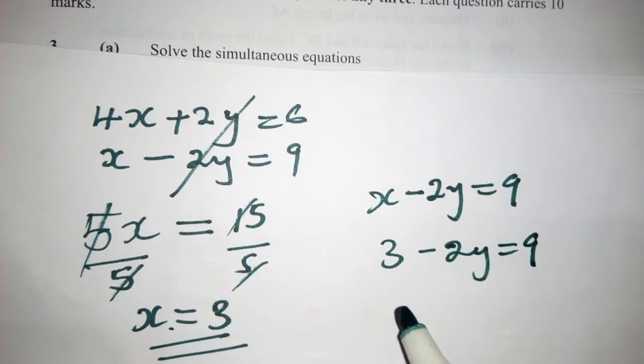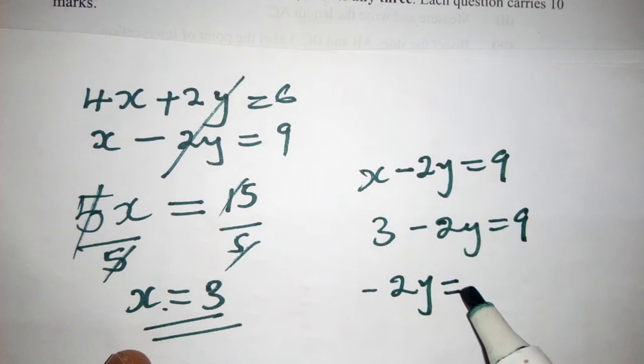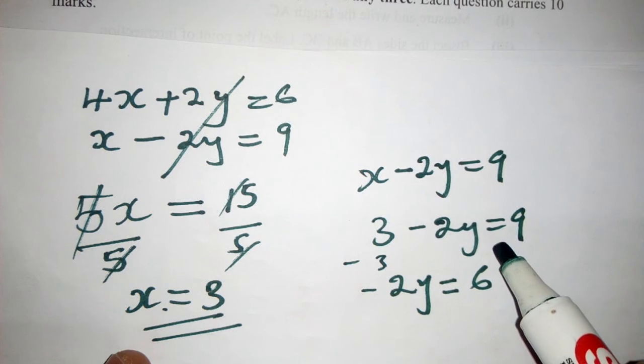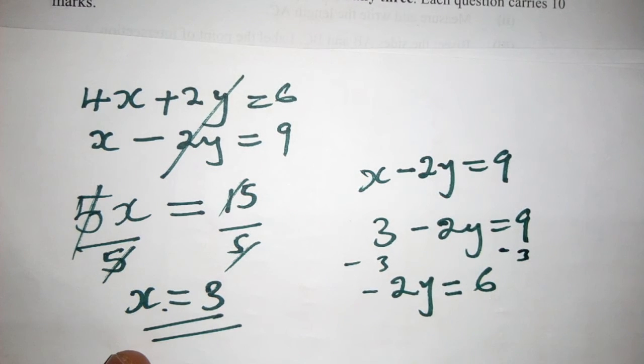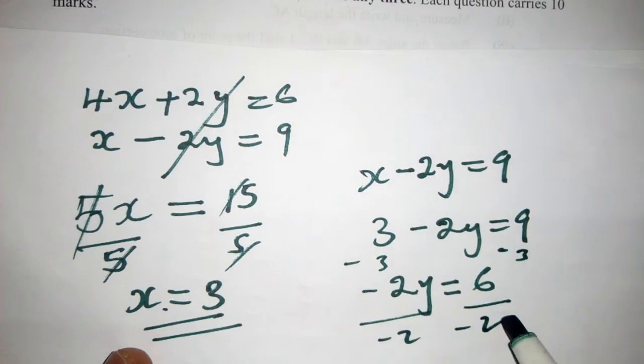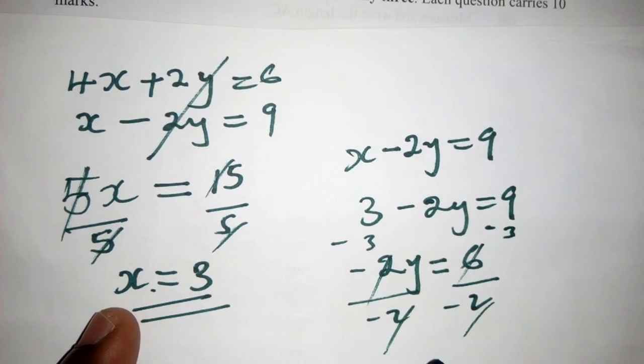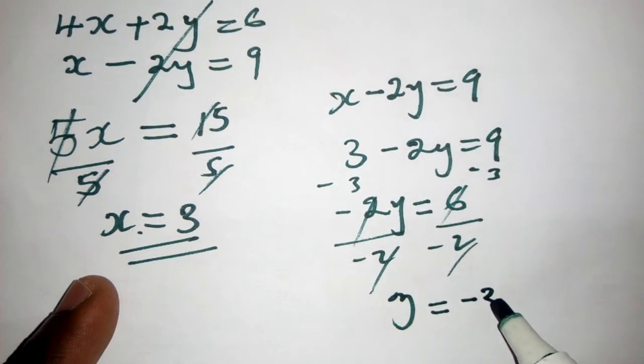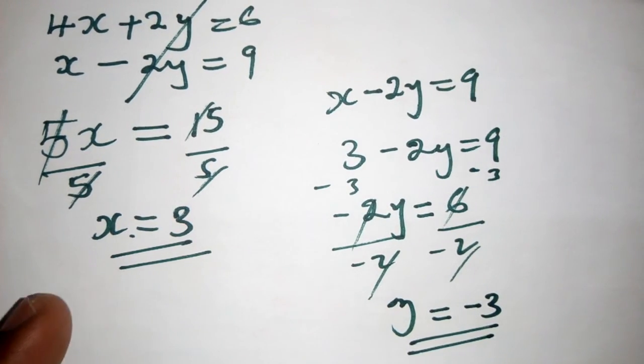Then I solve for y. So here it will be 6. I've just subtracted 3 from both sides. And then I'll have 3, divide by negative 2, by negative 2, so that I remain with the value of y, which is equal to negative 3. So the value of y is equal to negative 3.